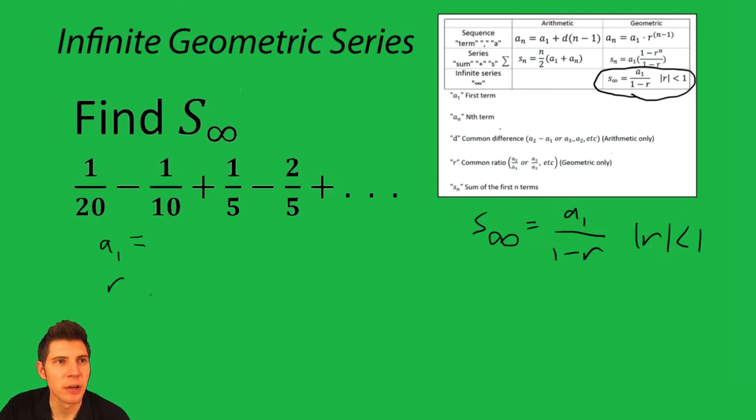What do we need? Well, we need to know what a one is and we need to know what r is. Once we know those two values, we can finish with the problem. A one is one twentieth, it's the first term.